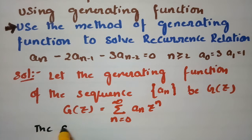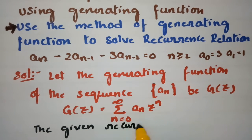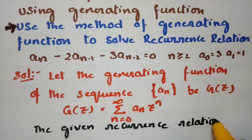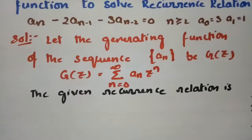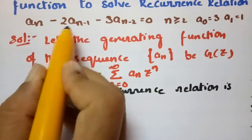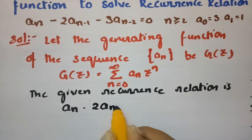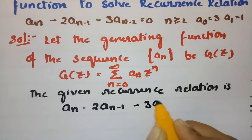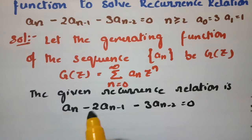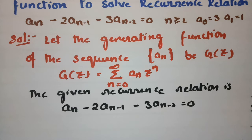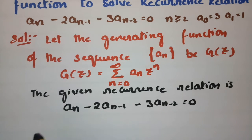From the question, the given recurrence relation is: aₙ minus 2 times aₙ₋₁ minus 3 times aₙ₋₂ equals 0. Now I am going to multiply both sides throughout the equation.